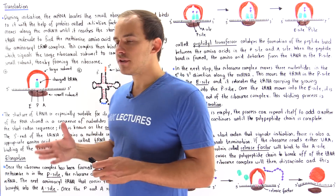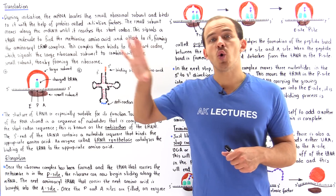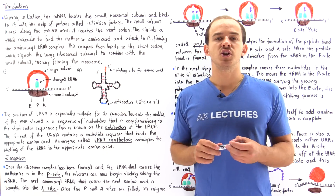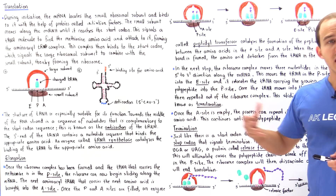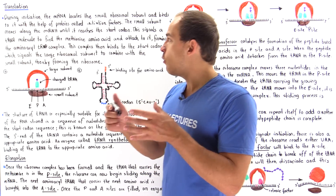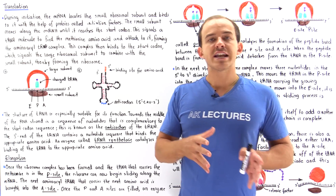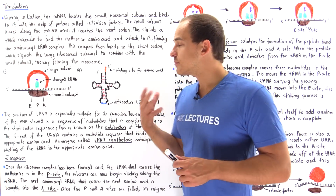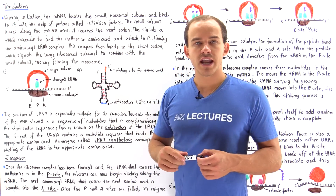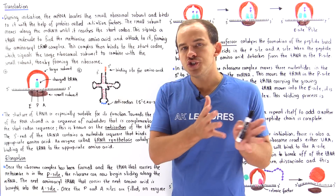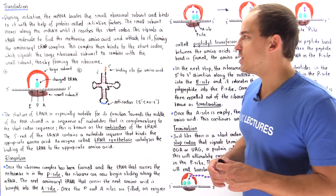Once our small subunit finds the start codon, it signals a tRNA molecule to go out and find the appropriate amino acid, which is the methionine amino acid. The tRNA then binds to our amino acid, and we form the aminoacyl-tRNA complex. A tRNA molecule bound to our amino acid is known as the aminoacyl-tRNA, or the charged tRNA. An uncharged tRNA means the tRNA is no longer bound to our amino acid.